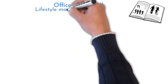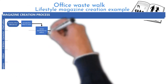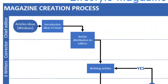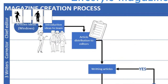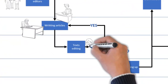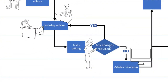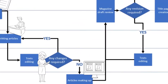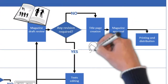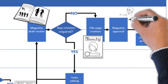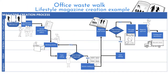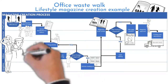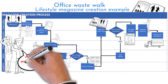Let's look at some details on a lifestyle magazine creation process. The team created a process map. The chief editor creates the first concept with ideas for article content called windows, then introduces it to the team. Articles are distributed to editors for writing. Editing and communication back to editors follows if needed. Articles are made up by graphics. Final form and article logic is reviewed by the chief editor and corrector. Then comes title page creation, magazine approval, printing, and distribution. It looks like it should be easy — but late approval and delays to the printing company are very frustrating and painful because of penalties for delays.